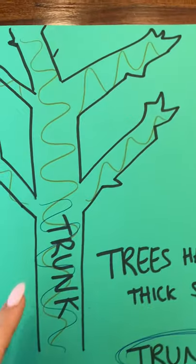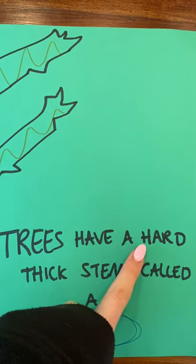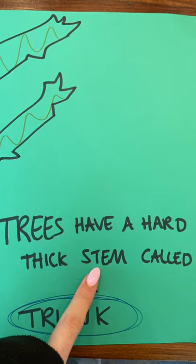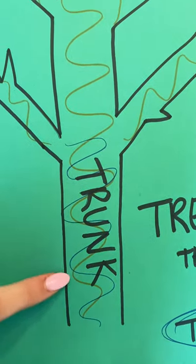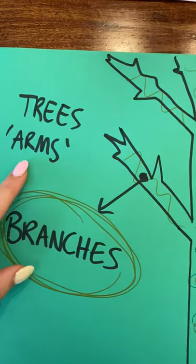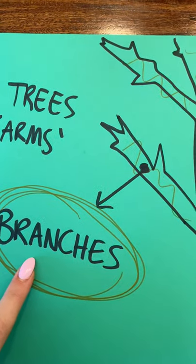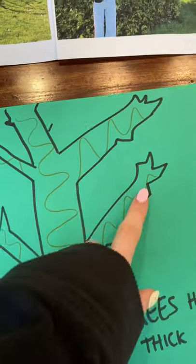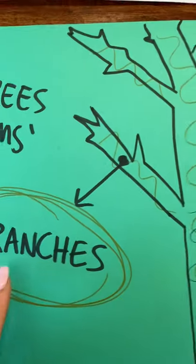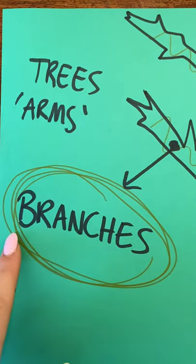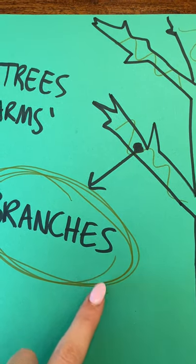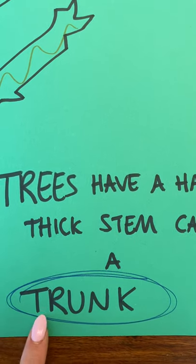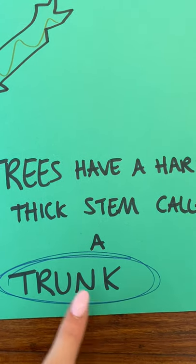Did you know that trees have a hard, thick stem called a trunk? This is the trunk. They also have arms which are called branches. These are the branches. So we have branches, b-r-a-n-c-h-e-s, branches and a trunk, t-r-u-n-k, trunk.